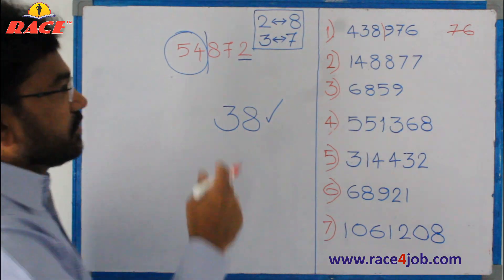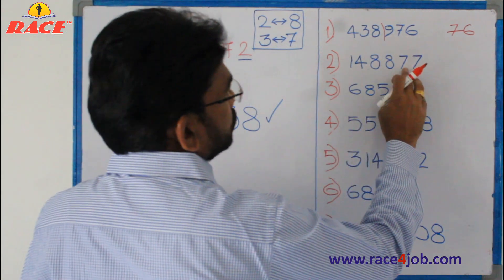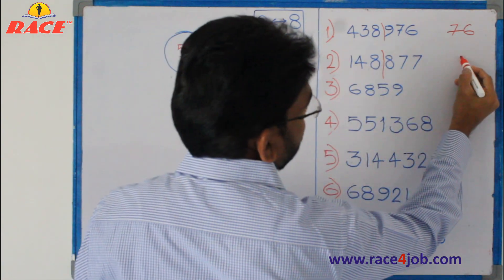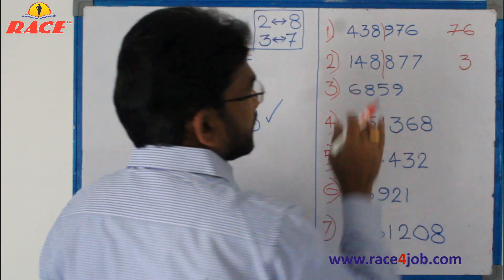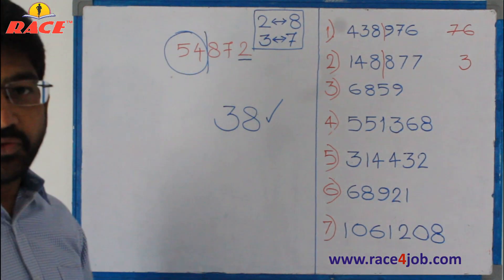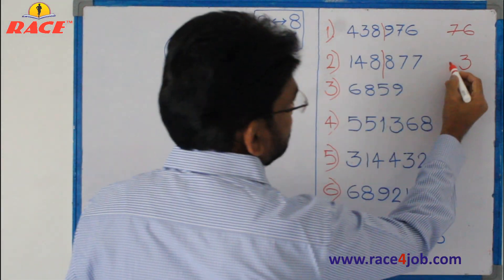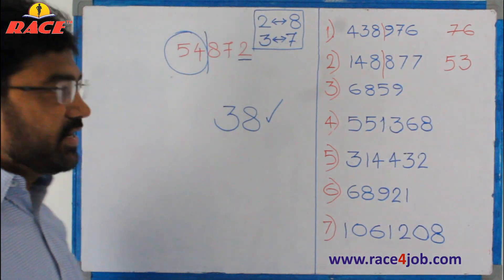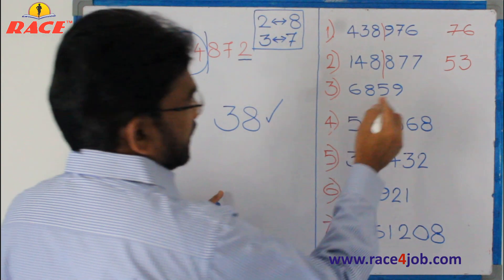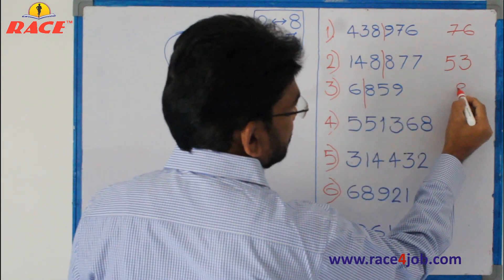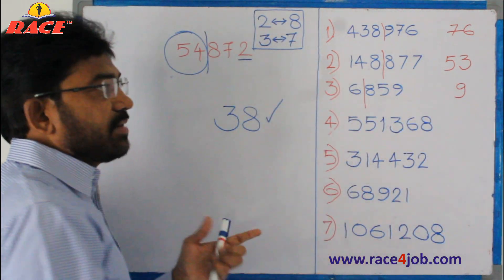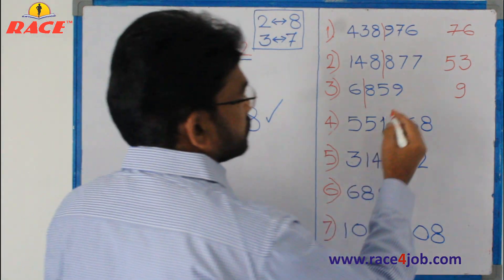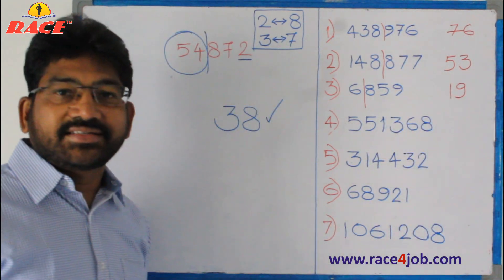Next question: divide into three digits on the right. The right side ends with seven — seven means three comes. The left side part is 148, which is between five cube (125) and six cube (216). The smaller is five. So 53 is our answer. Next one: 6859. Divide — right side ends with nine, nine means same nine comes. The left side is 6, which is between one cube and two cube. The smaller is one. So 19 is our answer.